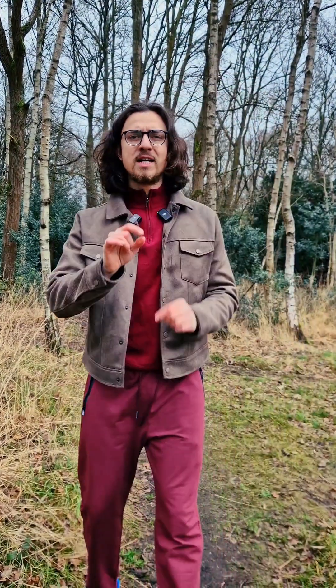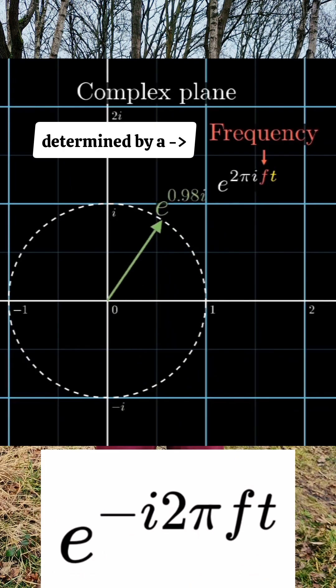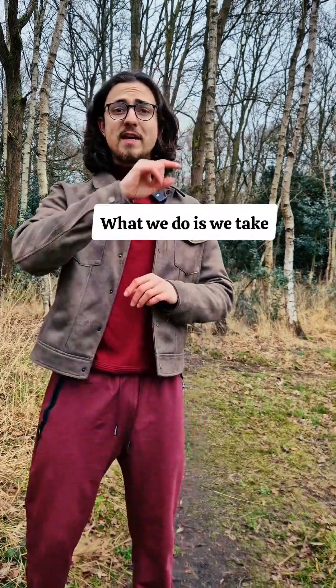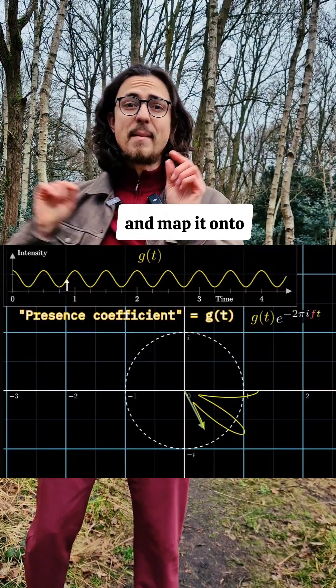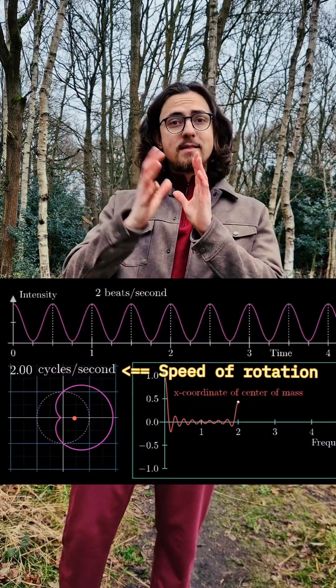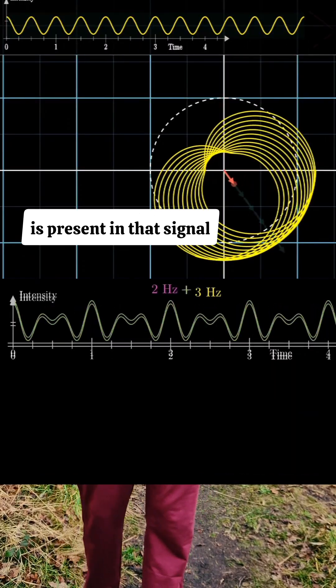I'll make it intuitive for you. Imagine a rotating point on a circle, moving at a speed determined by a frequency. That's at the heart of the Fourier transform. What we do is we take a point of a signal and map it onto that rotating circle. We then compare it at different speeds of rotation and see to which extent that frequency or that speed is present in that signal.